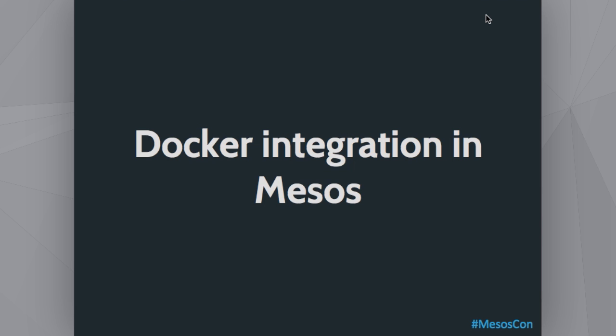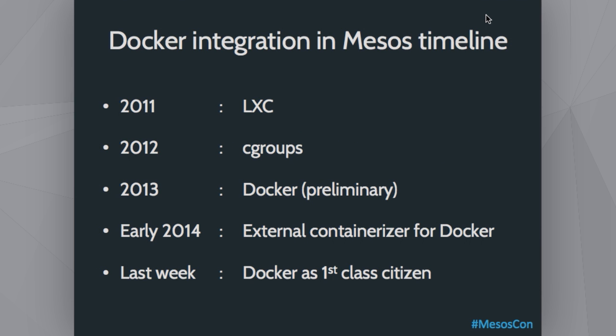Now let's talk about the Docker integration in Mesos. A small timeline: Mesos started to use LXC in 2011, but at that time it wasn't very reliable. So in 2012 they decided to use cgroups directly, which worked great. Docker started to become successful in 2013 and there was preliminary work on Docker with an executor. Earlier this year, an external containerizer for Docker was created — essentially a Python binary acting as a bridge between Mesos and Docker. It worked but was painful to set up, requiring the Python binary on every slave. As of last week, Docker is now a first-class citizen, meaning Mesos can talk to Docker directly.